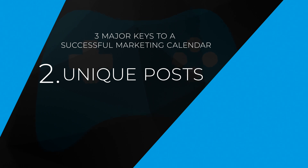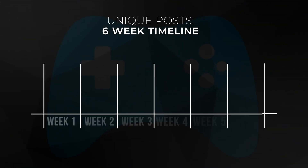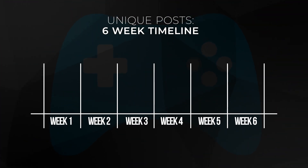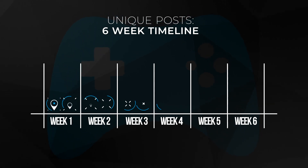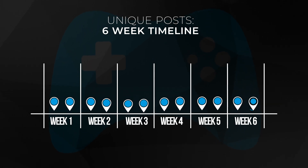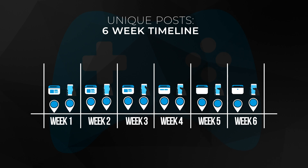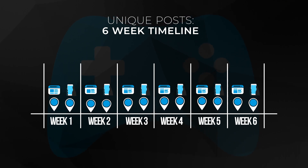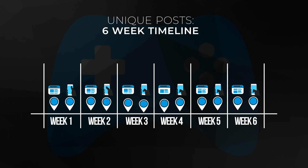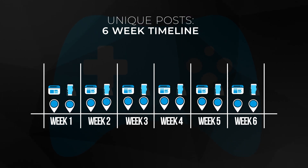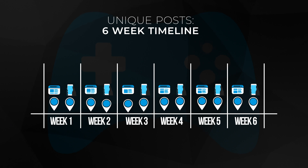Number two: unique posts. The major key to your audience not getting bored is to post on a regular basis but with different content each time. Let's imagine you have a six-week campaign. You know the days and times your audience is online, and you're committed to posting about it twice a week and mentioning it in your Instagram and Facebook stories twice a week as well. That means you have a minimum of 12 posts and 12 story mentions.